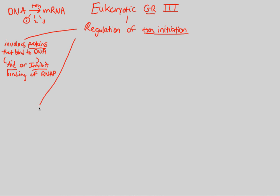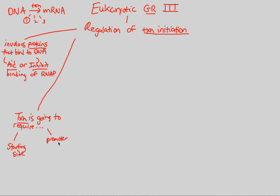Another important side note: transcription is going to require one or two things, or maybe even a combination of both. These two requirements are essential in making sure transcription occurs correctly, and that's where we'll focus on our regulation — our on or off switches. The main idea is that there's going to be a starting site important in transcription, and also a region we're already familiar with: the promoter. Remember, this is not a promoter in terms of the lac operon because we are looking at eukaryotes — eukaryotes do not have operons, but they do have promoters.